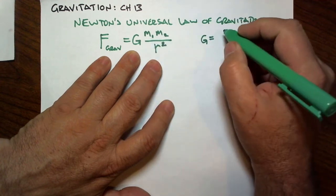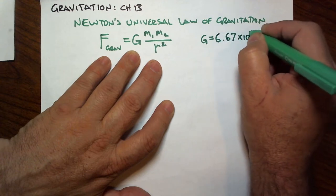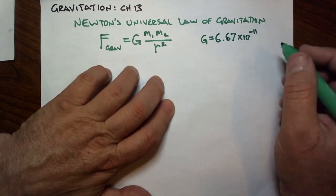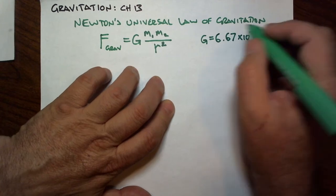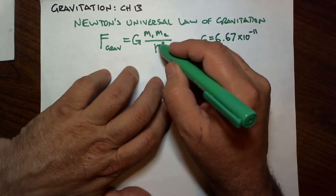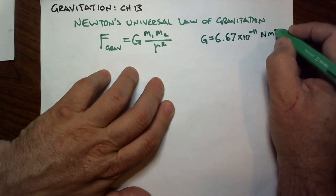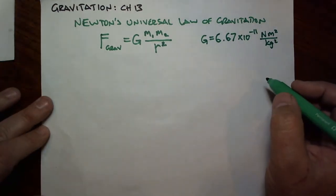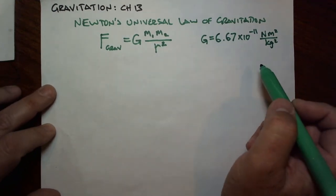The number he got, after some refinement, was 6.67 times 10 to the minus 11, which is a remarkably small number. It means that gravity is a remarkably small force. The units for this constant are strange: newtons times meters squared divided by kilograms squared. There's no need to memorize this. It's written on the helpful information sheet for the AP test. But you can tell that's what it needs to be.